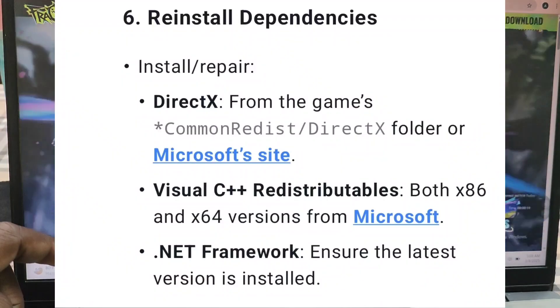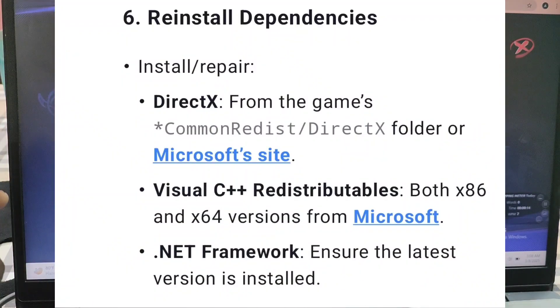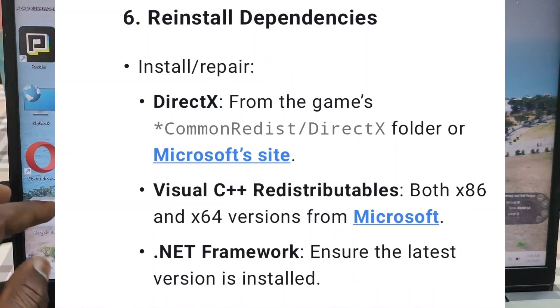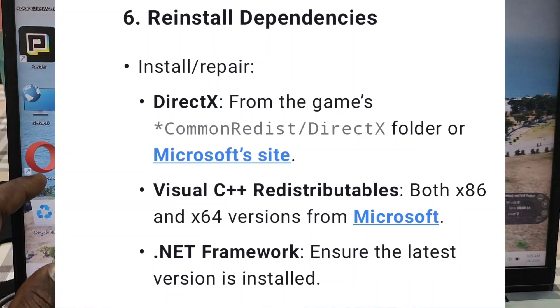Monitor Event Viewer. Type 'Event Viewer' in the Windows search bar, then navigate to Windows Logs > Application and look for errors related to Fragpunk at the time of the crash for diagnostic clues.